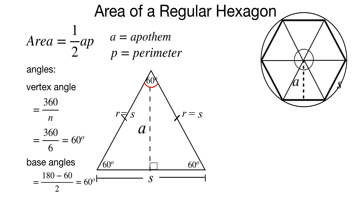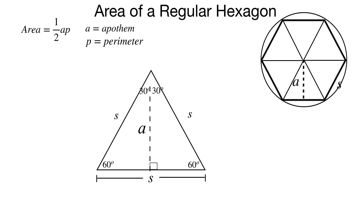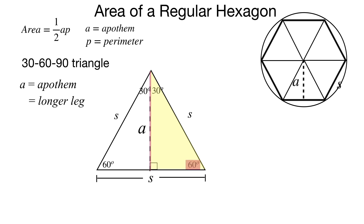That's what's special about this being a hexagon. Now thinking about how to get the area of this triangle — if I drop that altitude, which is the apothem, for any isosceles (and here equilateral) triangle, that creates two congruent right triangles. I'm creating two 30-60-90 triangles. Focusing on the one on the right, I want to find A, the apothem, or the height of that triangle. The apothem is the longer leg of that 30-60-90, the side opposite the 60-degree angle.